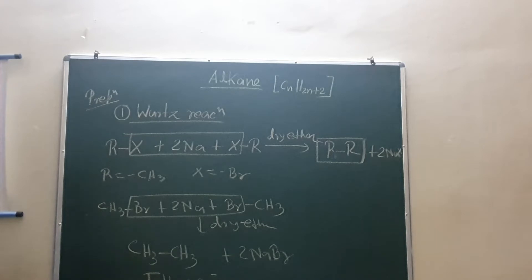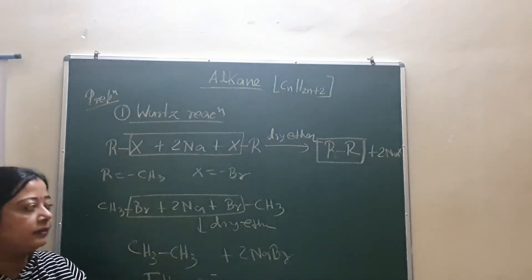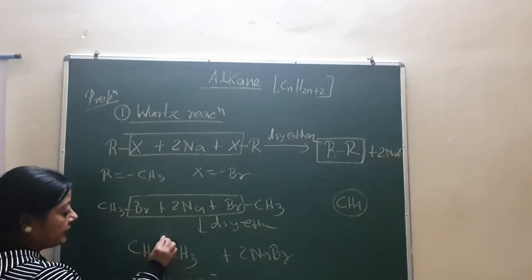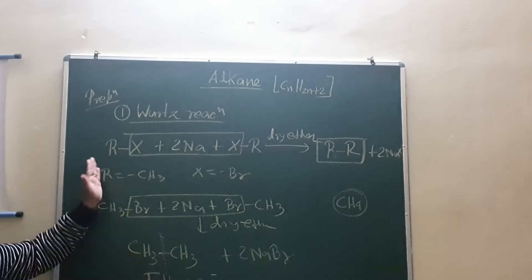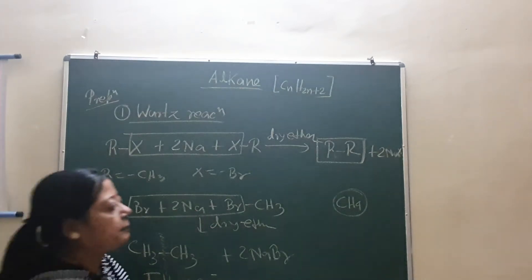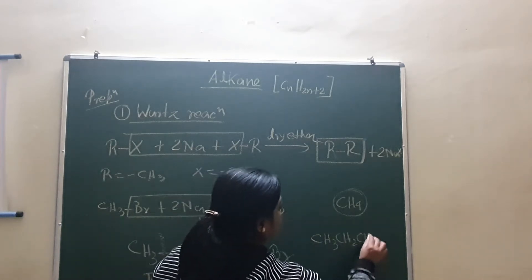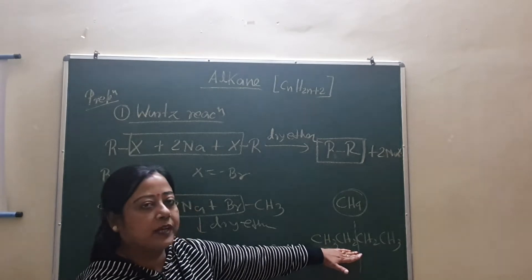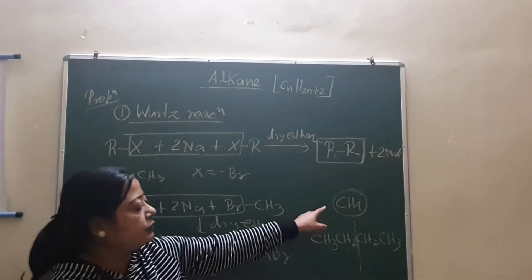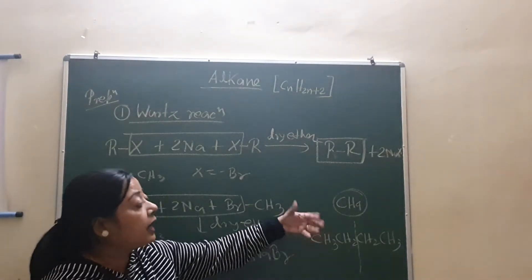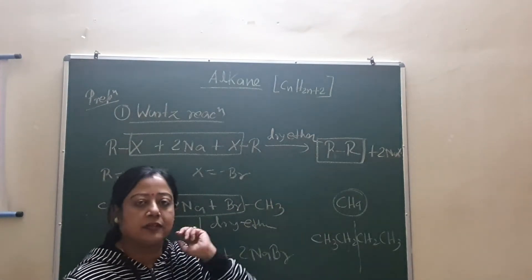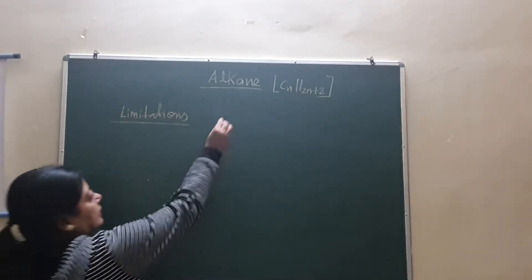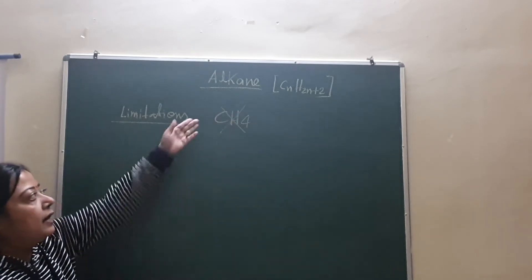Now, limitations of this reaction. The first limitation: you can't prepare methane, that is CH4 by this method. Why? Because suppose you want to prepare ethane, your starting material would be CH3Br and CH3Br. Suppose you want to make butane CH3-CH2-CH2-CH3, your starting material would be CH3-CH2Br and sodium. But if you want to prepare methane, it is impossible because you can't obtain half C.